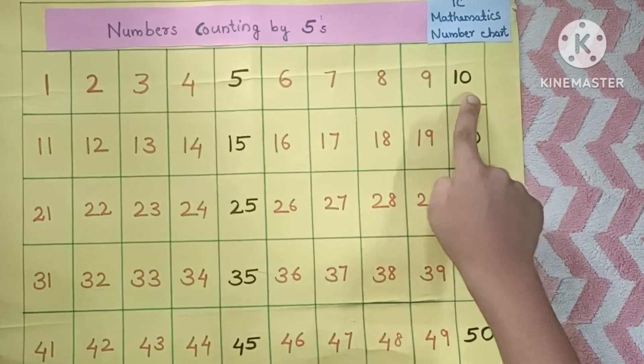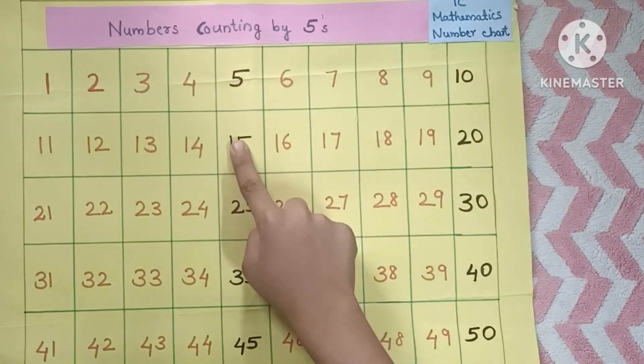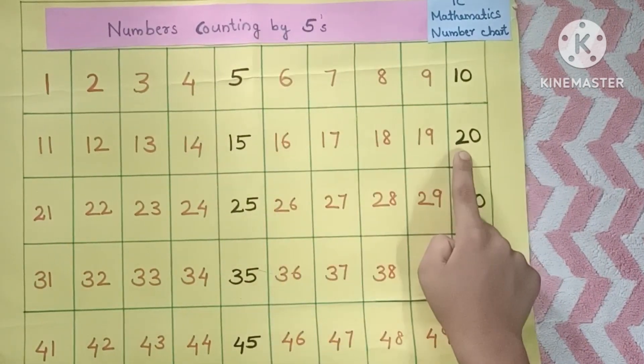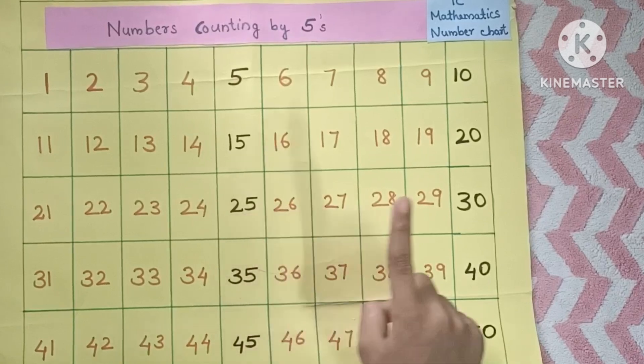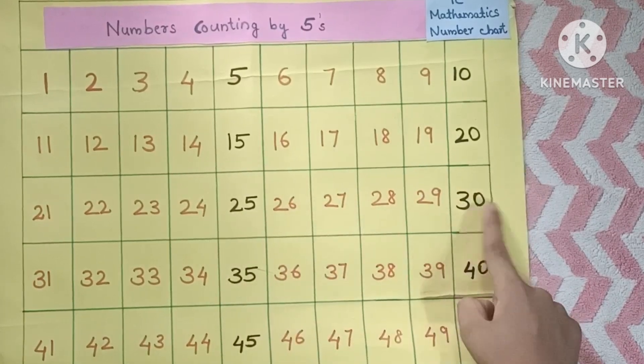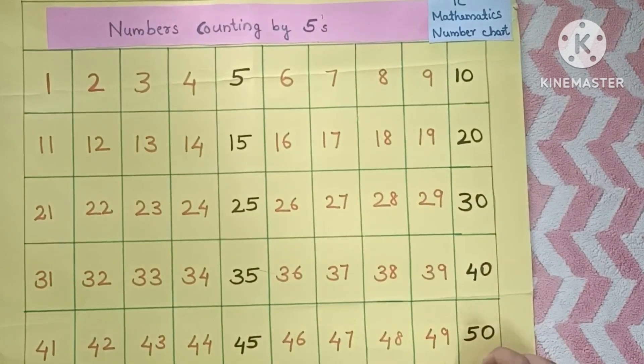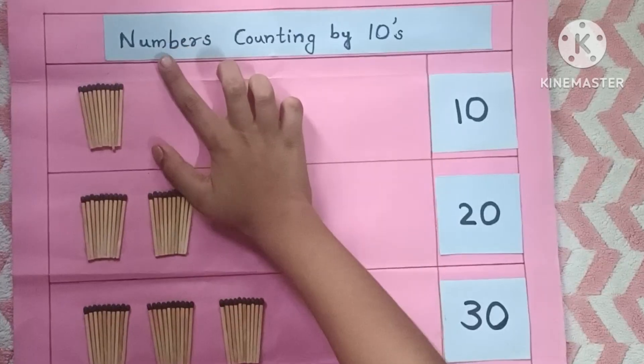Numbers counting by fives: 5, 10, 15, 20, 25, 30, and so on.